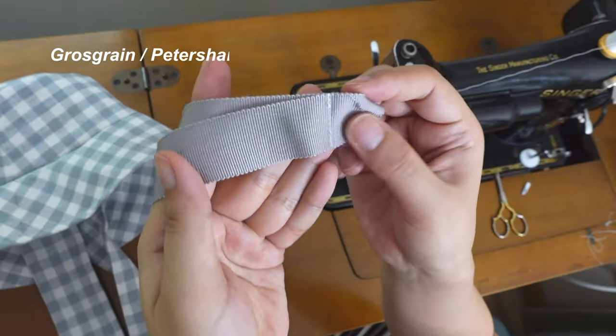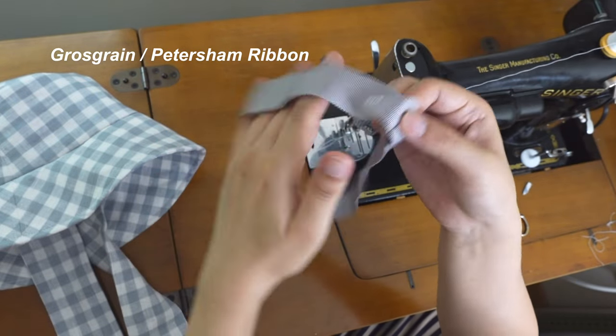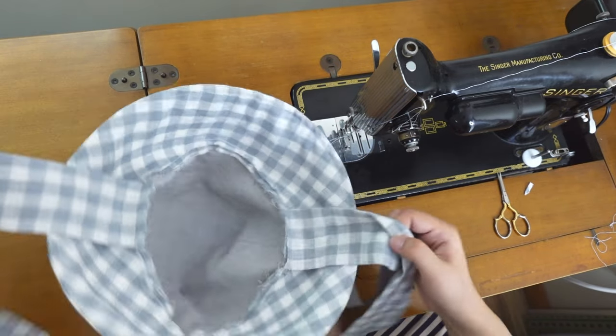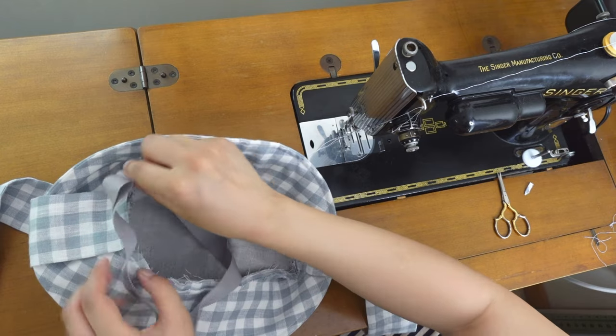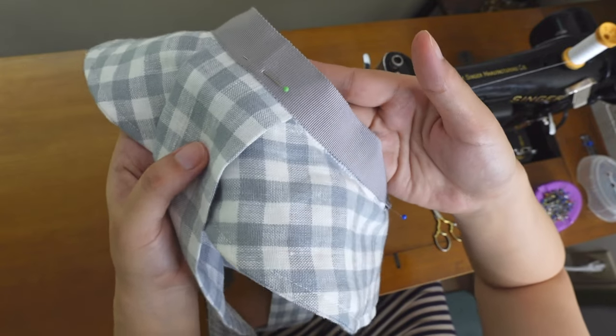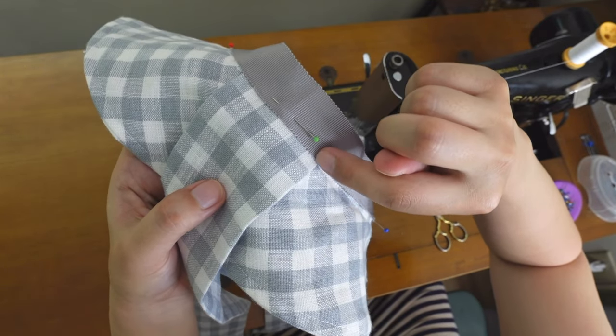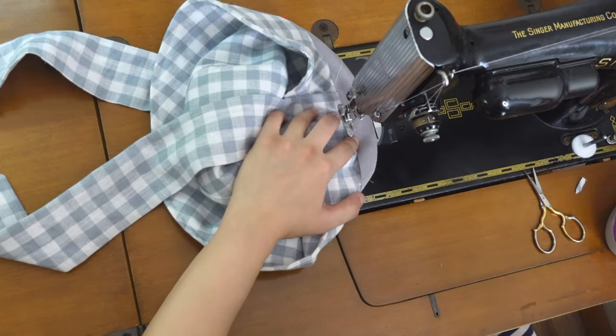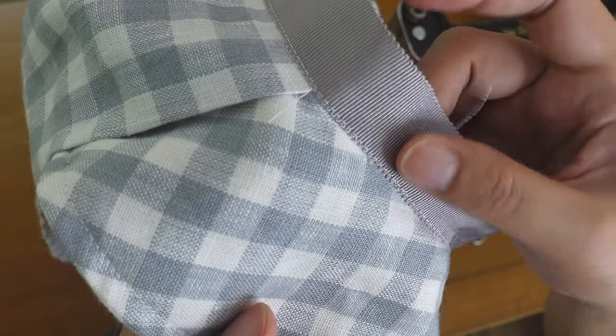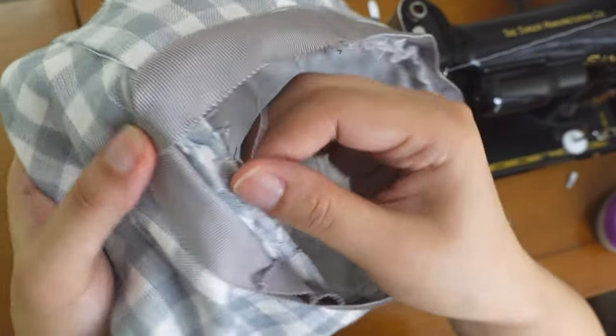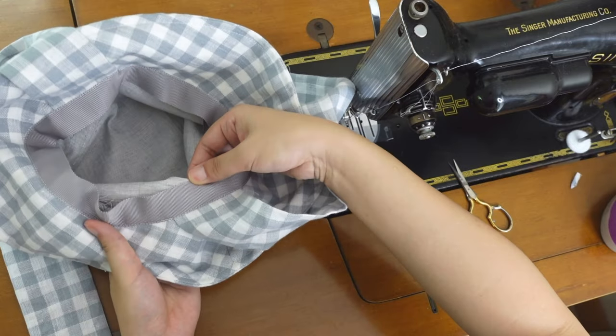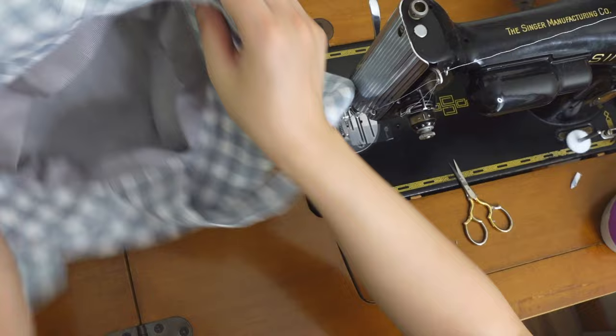For the sizing ribbon, I use grosgrain or petersham ribbons. Make it to the size of the finished hat measurement. In my case, it is 23 inches. Then place the edge at the stitching line. And stitch very close to the edge to attach the ribbon to the seam allowances. You can leave the seam allowances inside like this or you can serge or zigzag to make it neat. You can also sew the ribbon in couple places to keep it in place.